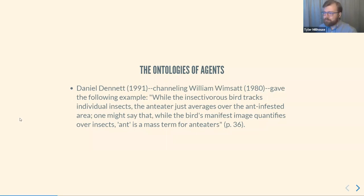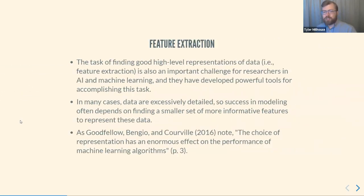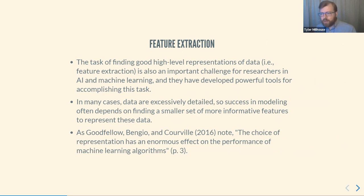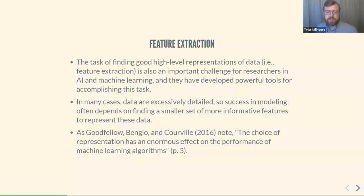This isn't just a problem for naturally occurring agents. When we go to make an agent in AI, or try to find a model in machine learning that can solve some problem, we face a similar challenge. People working in AI and machine learning have developed really powerful tools for feature extraction — extracting good features from data. The reason this is so important is that in many cases, data are excessively detailed, and success in modeling often depends on finding a smaller set of more informative features to represent the data. As Goodfellow et al. note, the choice of representation has an enormous effect on the performance of machine learning algorithms.